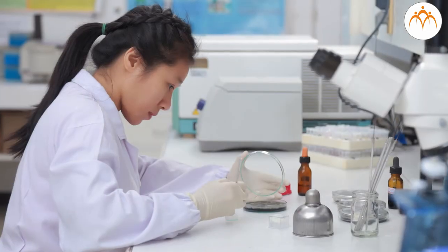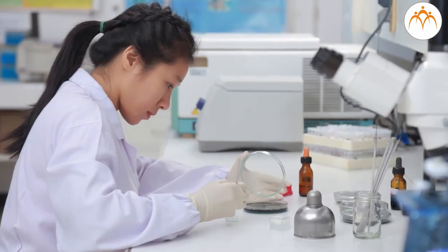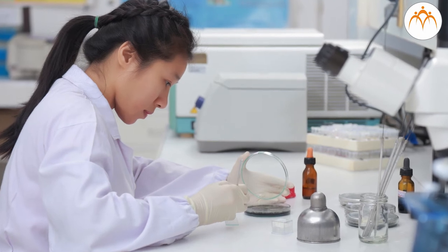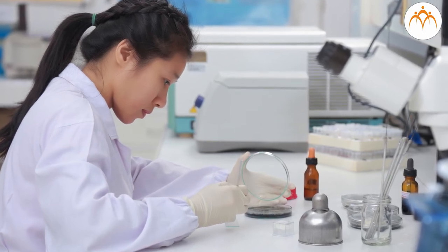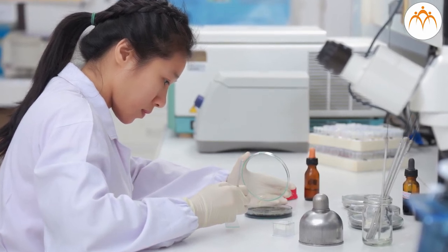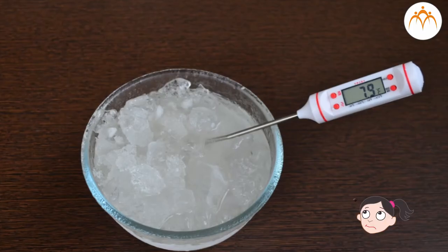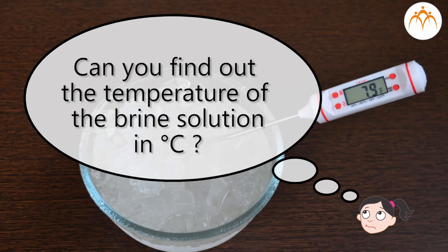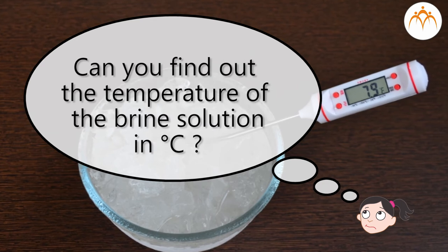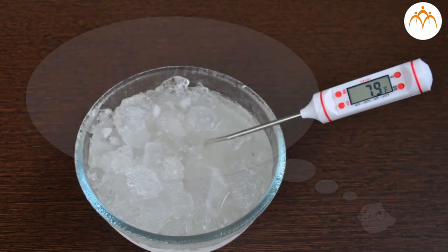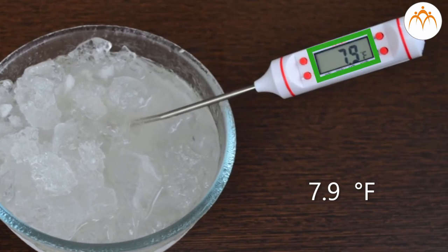The Celsius scale is in general use wherever metric units have been accepted, and it is used in scientific work everywhere. Challenge: can you find out the temperature of a brine solution in degrees Celsius if its temperature is 7.9 degrees Fahrenheit?